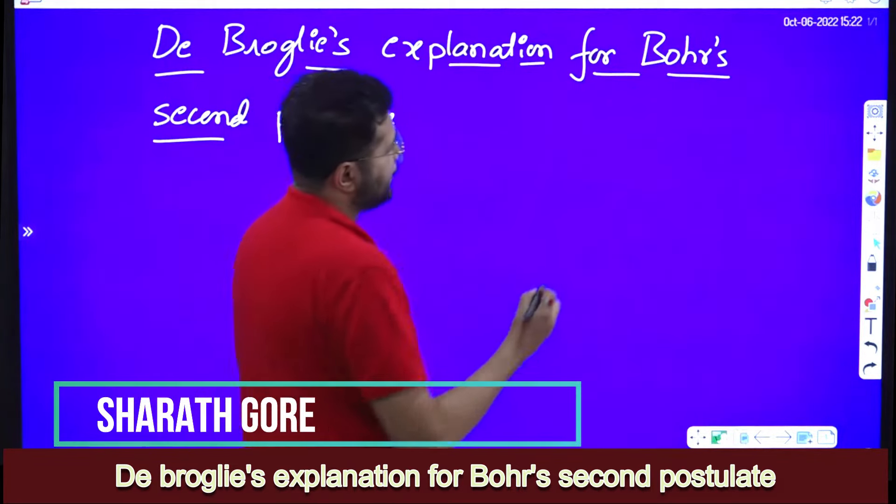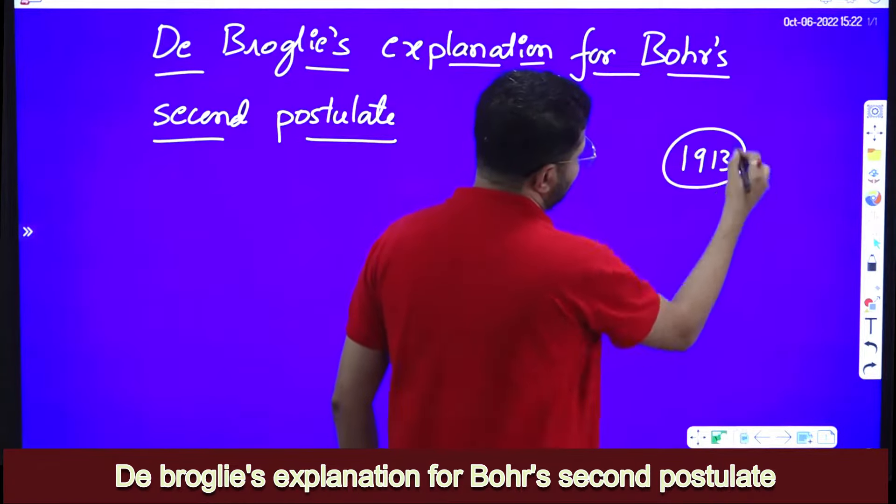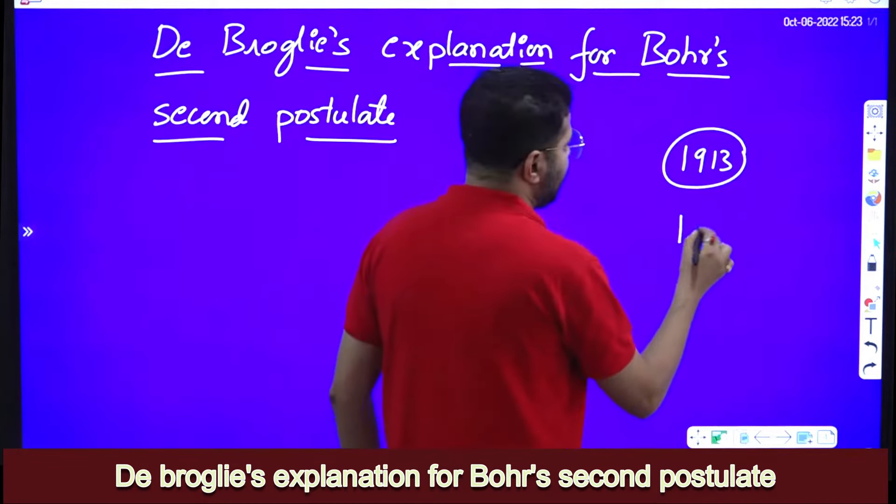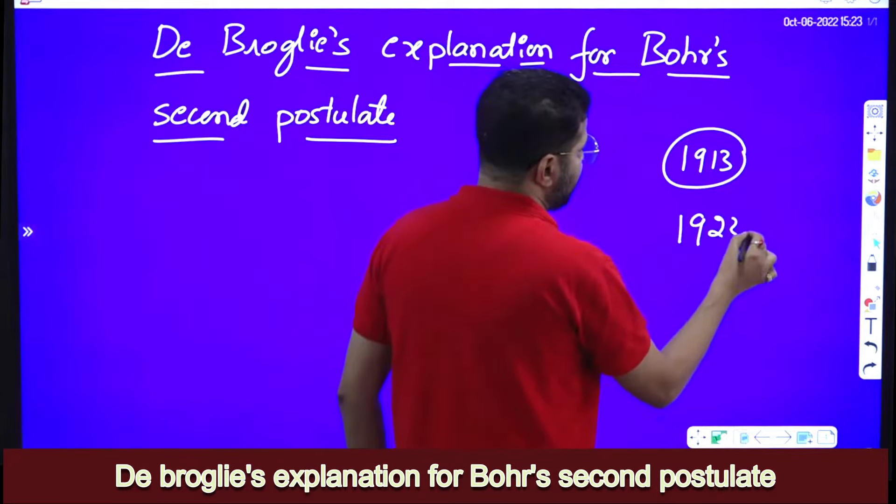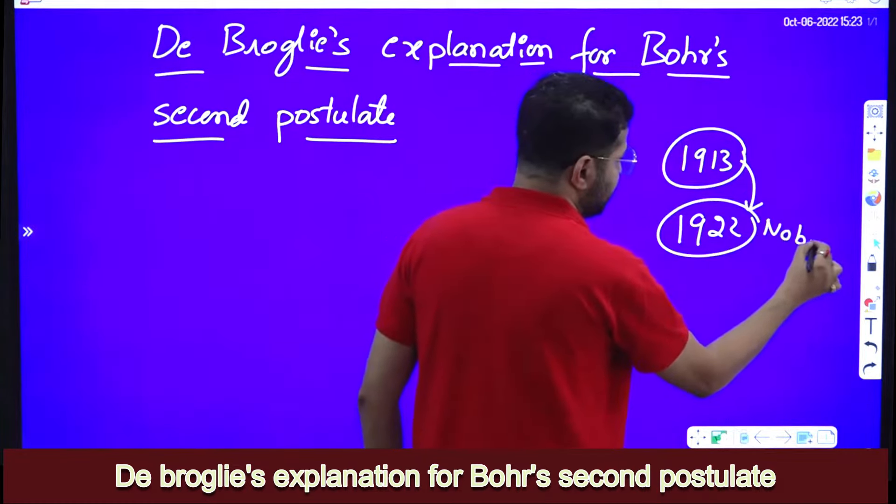Now here, what is very important to remember is that Bohr's theory was given in 1913, and Niels Bohr got the Nobel prize for this achievement in 1922.